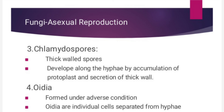The next type of spore is oidia. These are formed under very adverse conditions. These are small yeast-like cells that are formed when hyphae fragment into individual cells.